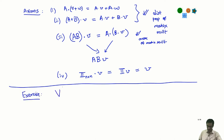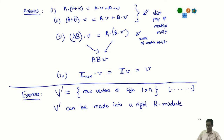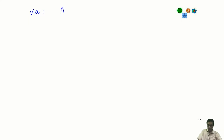Instead of V, let us take V' to be the set of all row vectors of size N, meaning matrices of size 1×N. A typical element is a row vector. The claim is that V' can be made into a right module over this ring R of matrices.